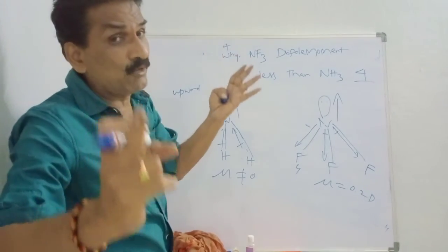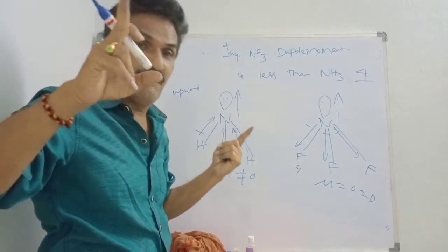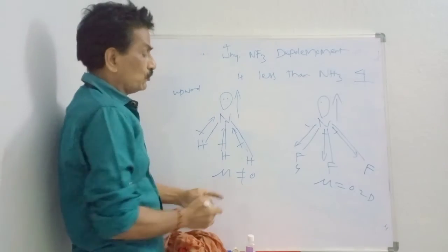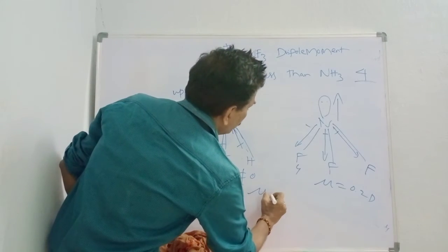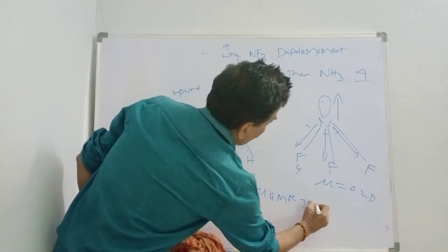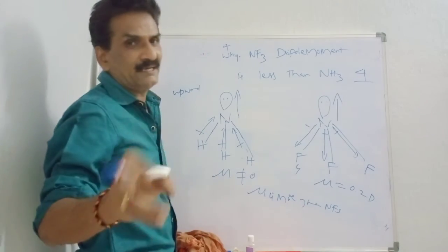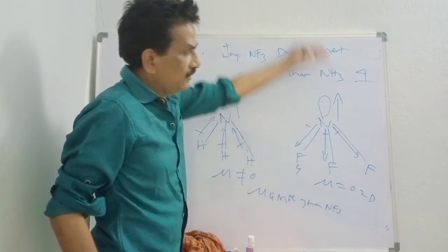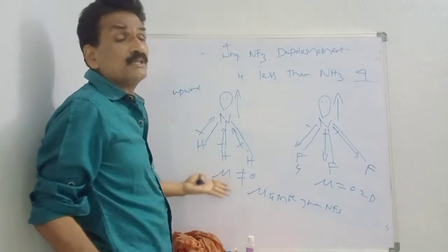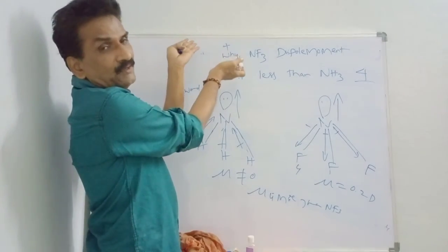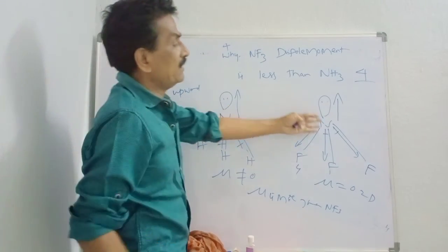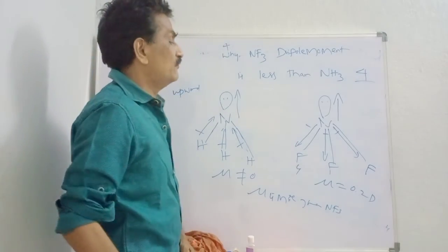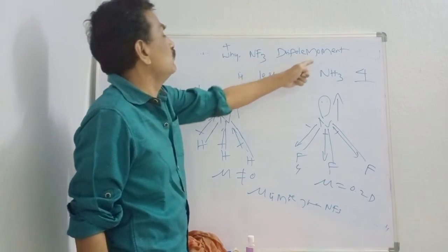Dipole moment is a vector quantity - already discussed in the previous video - it has magnitude and direction. In NH3, all are in the upward direction, so mu is not equal to zero and mu is greater than that of NF3. In NF3, the N-F bond dipoles and the lone pair dipole partially cancel - some downward, some upward. There is no such cancellation in NH3 - all are in the upward direction, giving more dipole moment. Because of this cancellation in NF3, the dipole moment value is very less. Therefore, NF3 dipole moment is less than NH3.